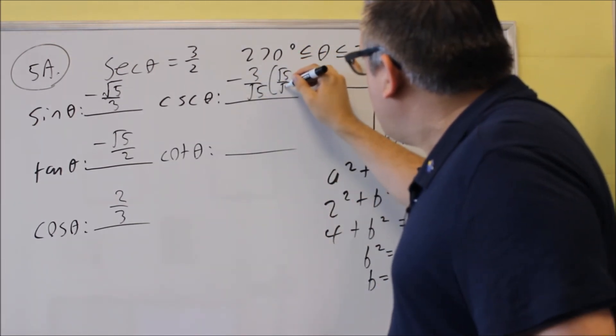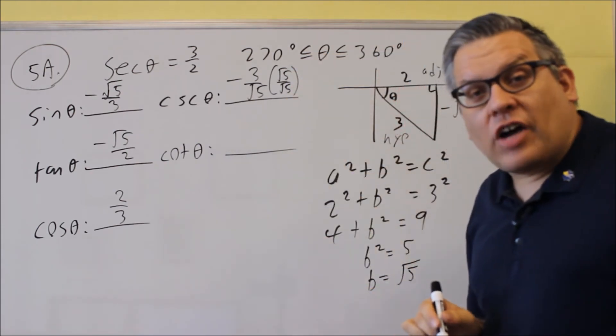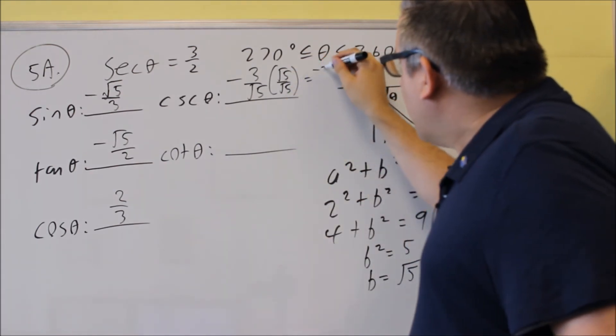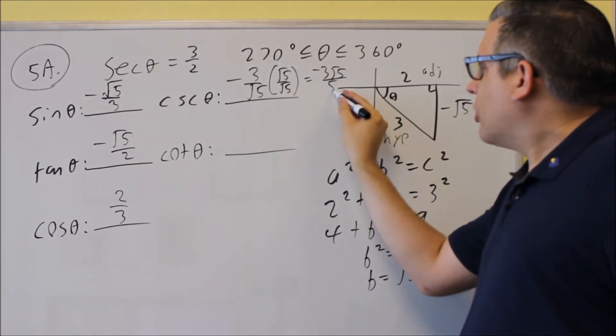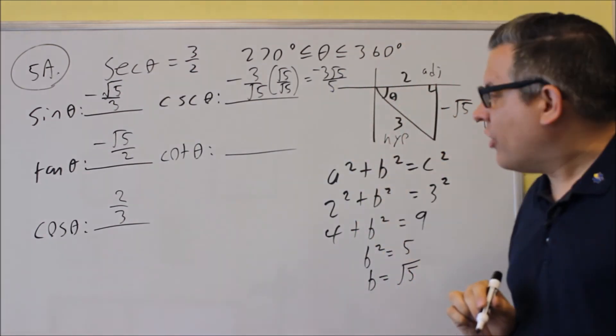We're going to multiply top and bottom by square root of five over square root of five. And we get negative three square root of five over five. And that's the answer for cosecant. Negative three root five over five.